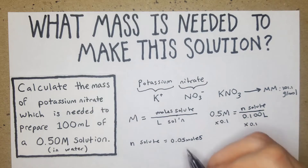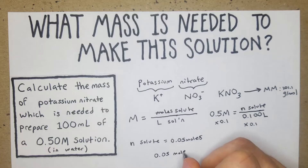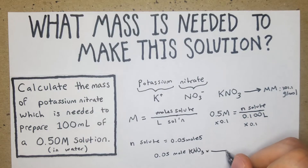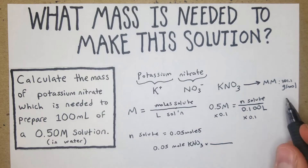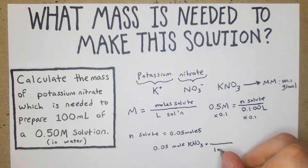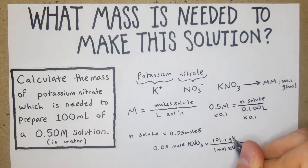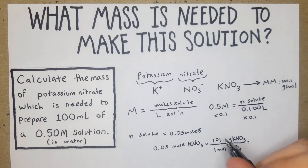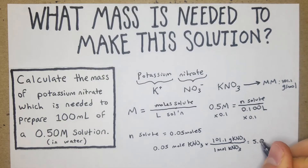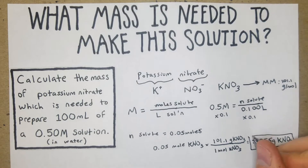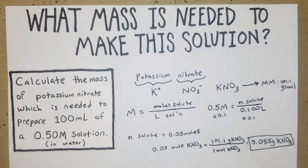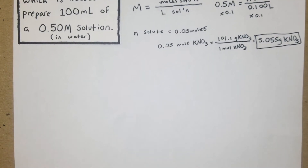Now we can work backwards: 0.05 moles of KNO₃ multiplied by the molar mass — 1 mole equals 101.1 grams of KNO₃ — gives us 0.05 × 101.1 = 5.05 grams of KNO₃. That is how many grams are needed to make that solution.